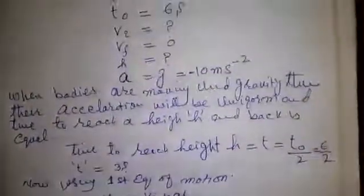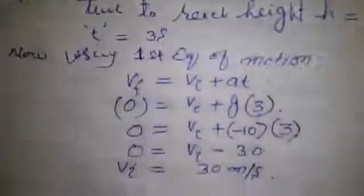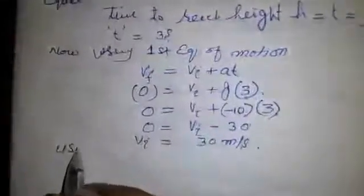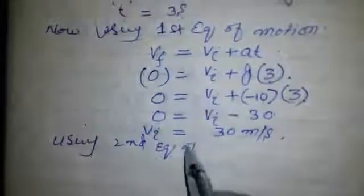Now we have to find its maximum height. We have two methods to find the height: one is we use equation number 2 or we use equation number 3. Here we have sufficient data to use both equations. So let us try with equation number 2, using second equation of motion.